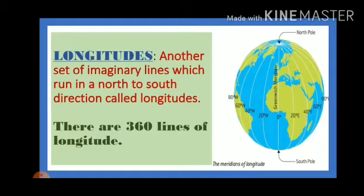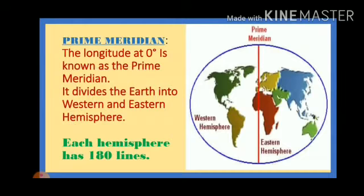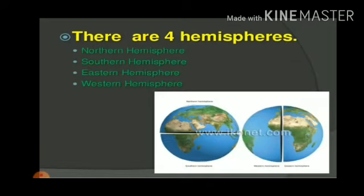There are 360 lines of longitude. Now, what is the prime meridian? Just like the equator divides the earth into northern and southern hemispheres, the prime meridian divides the earth into western and eastern hemispheres. The prime meridian is the 0 degree longitude — just like 0 degree latitude is the equator, 0 degree longitude is the prime meridian. Each hemisphere has 180 lines: western hemisphere 180 lines, eastern hemisphere 180 lines. So there are 4 hemispheres in total: northern, southern, eastern, and western hemispheres.